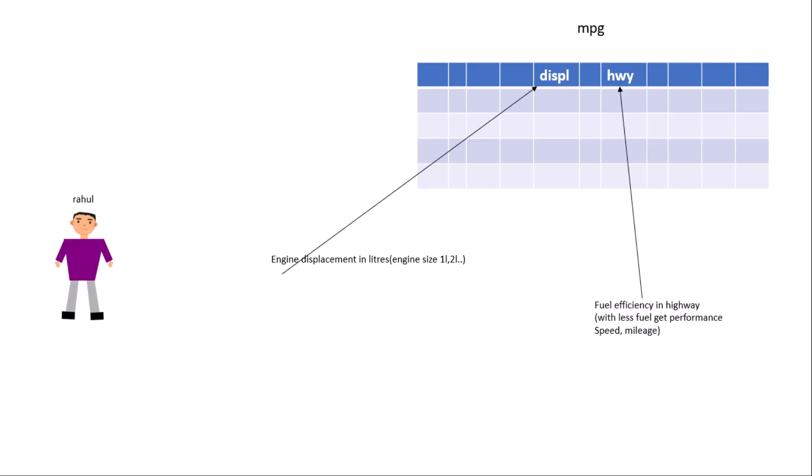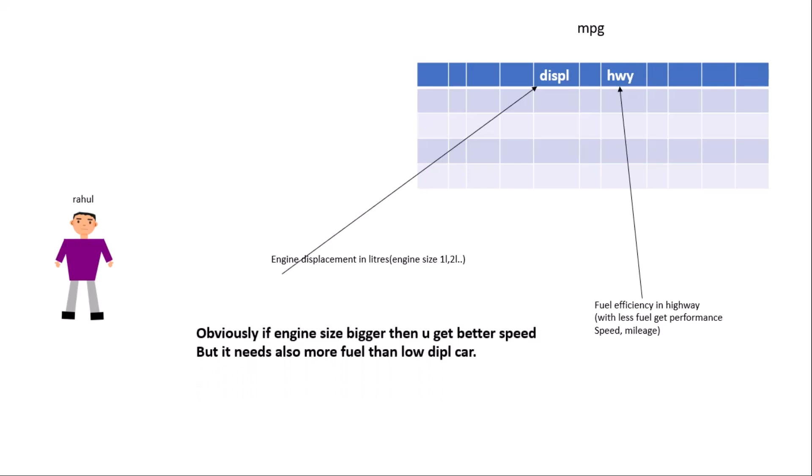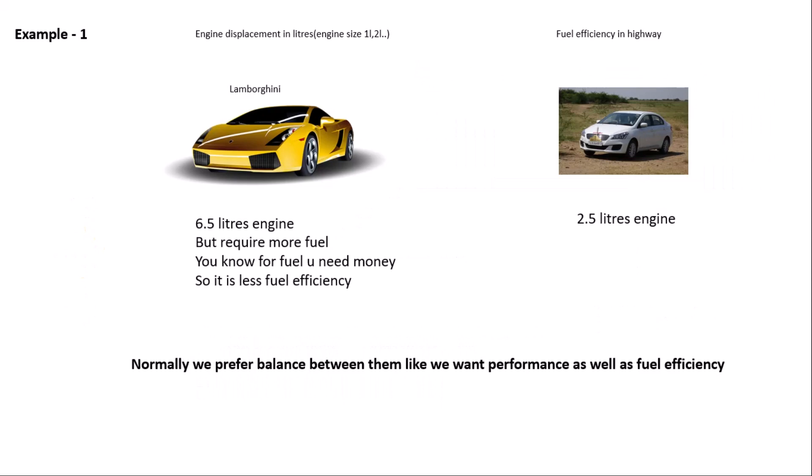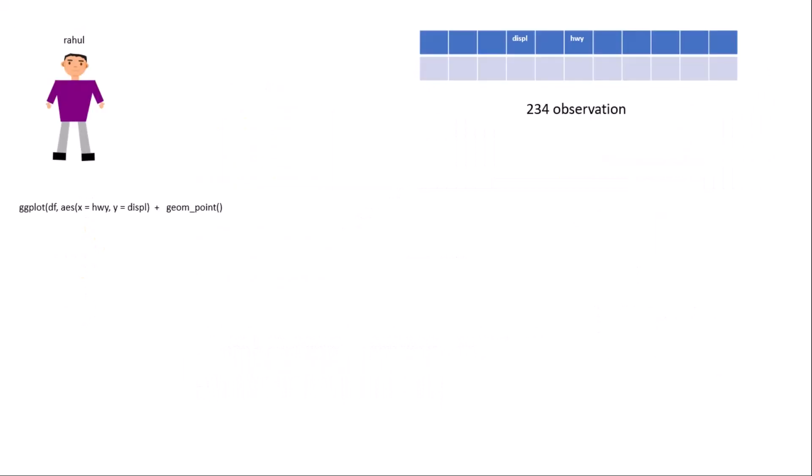Fuel efficiency means: with less fuel, how much performance do you get — performance meaning speed and mileage. This is very normal: if the engine size is bigger, you get speed but it also needs more fuel, and fuel costs money. For example, a Lamborghini has a 6.5 liter engine and you get speed very fast but it consumes lots of fuel. A normal car has around a 2.5 liter engine, and we normally prefer the balance between performance and fuel efficiency.